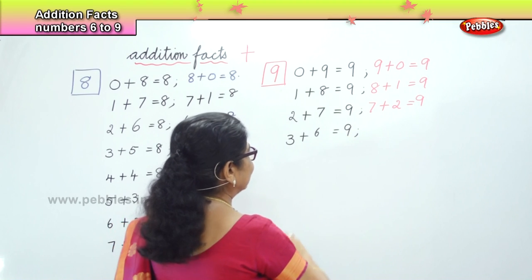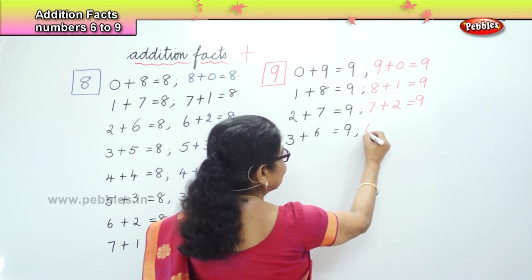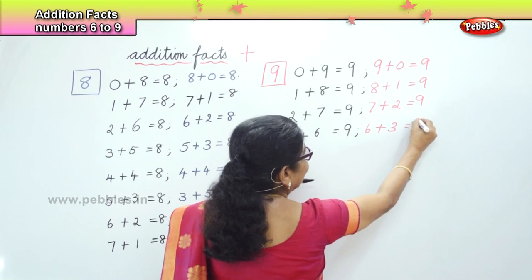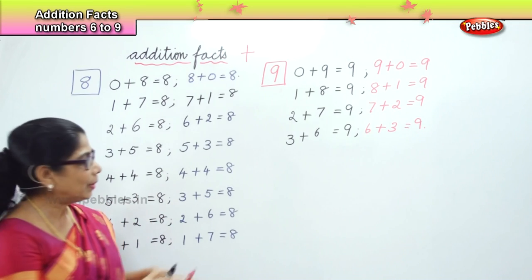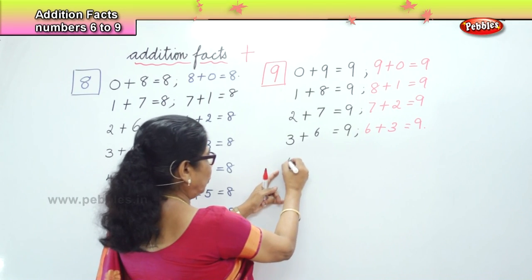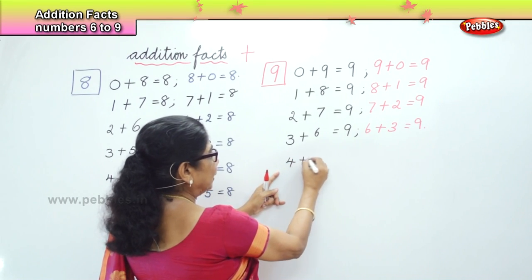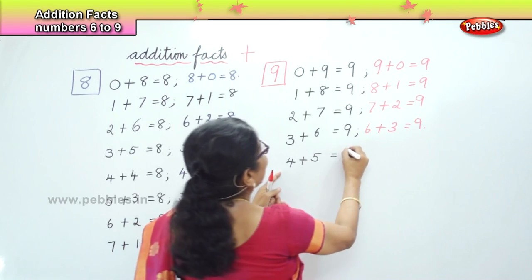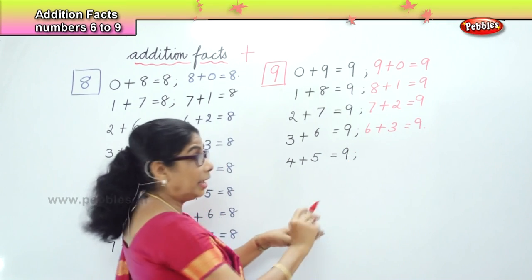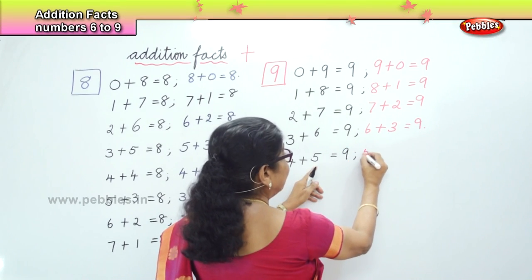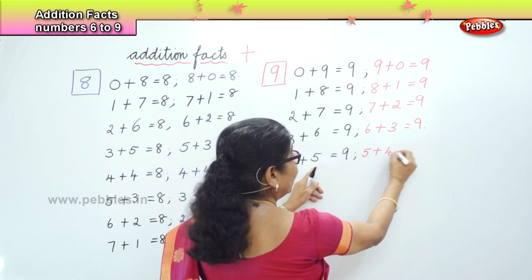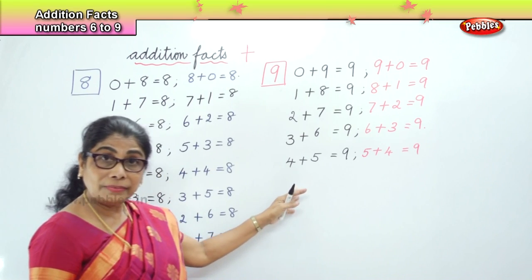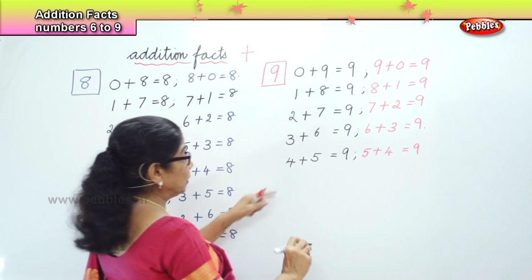And the reverse: 6 plus 3 is also equal to 9. Next is 4. 4 plus 5 is equal to 9. And the reverse: 5 plus 4 is equal to 9. So 4 plus 5 is 9, and 5 plus 4 is also 9.